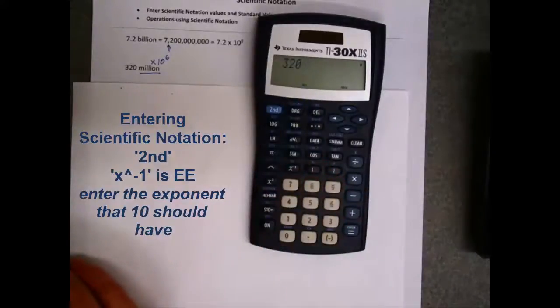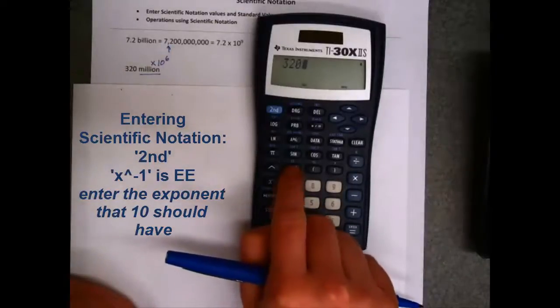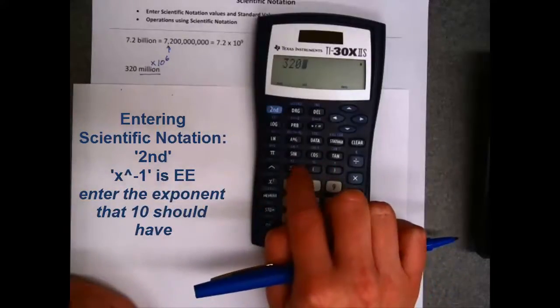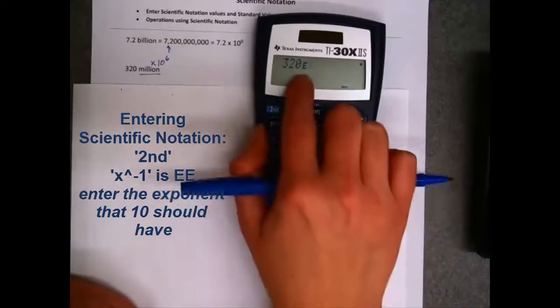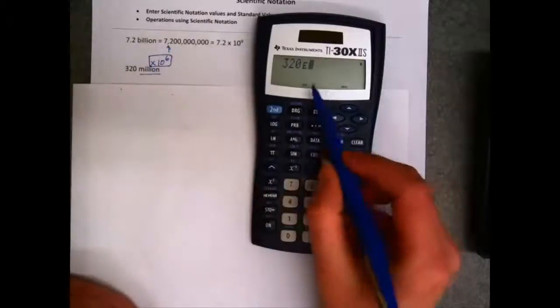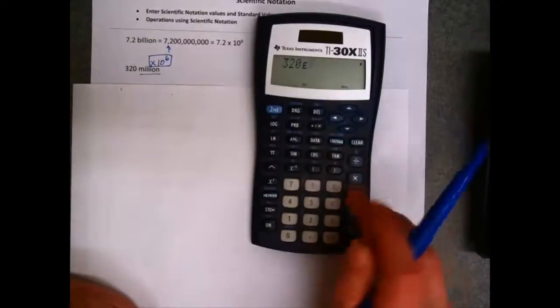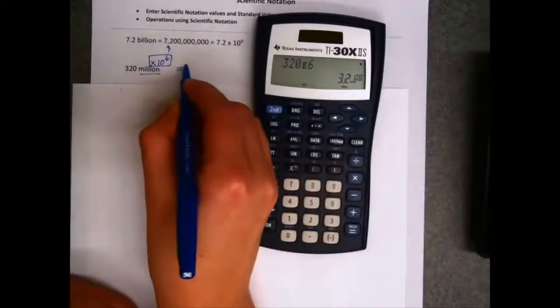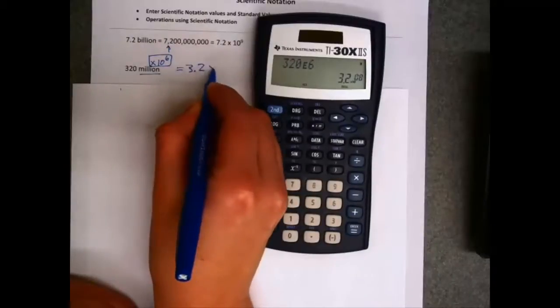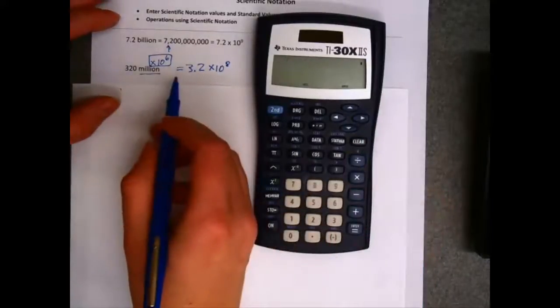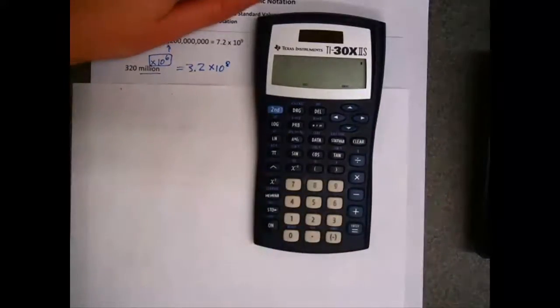You could say I have 320. Now to get the times 10 to the part in this calculator, we need to use this EE symbol that's above this inverse button. So you hit second, and then this key that's above the 7 button. And it displays an E on here, but that E is really short for times 10 to the 6th. I'm going to put the E standing for exponent. I just need to put the 6 in here. And the calculator automatically puts that in correct scientific notation, because correct scientific notation wouldn't be 320 times 10 to the 6th. It would be 3.2 times 10 to the 8th.